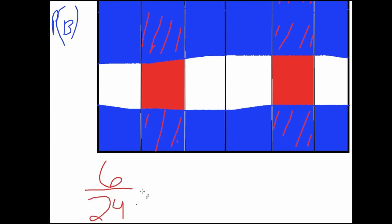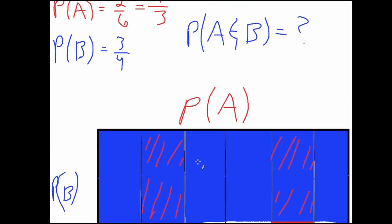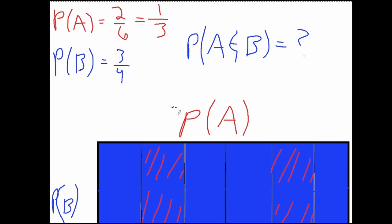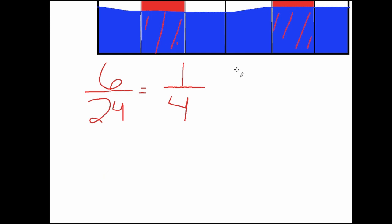This, if we simplify it by dividing by six, will equal one over four. Now to know where this one fourth came from, we can go back to our original probabilities, which were two sixths and three over four.